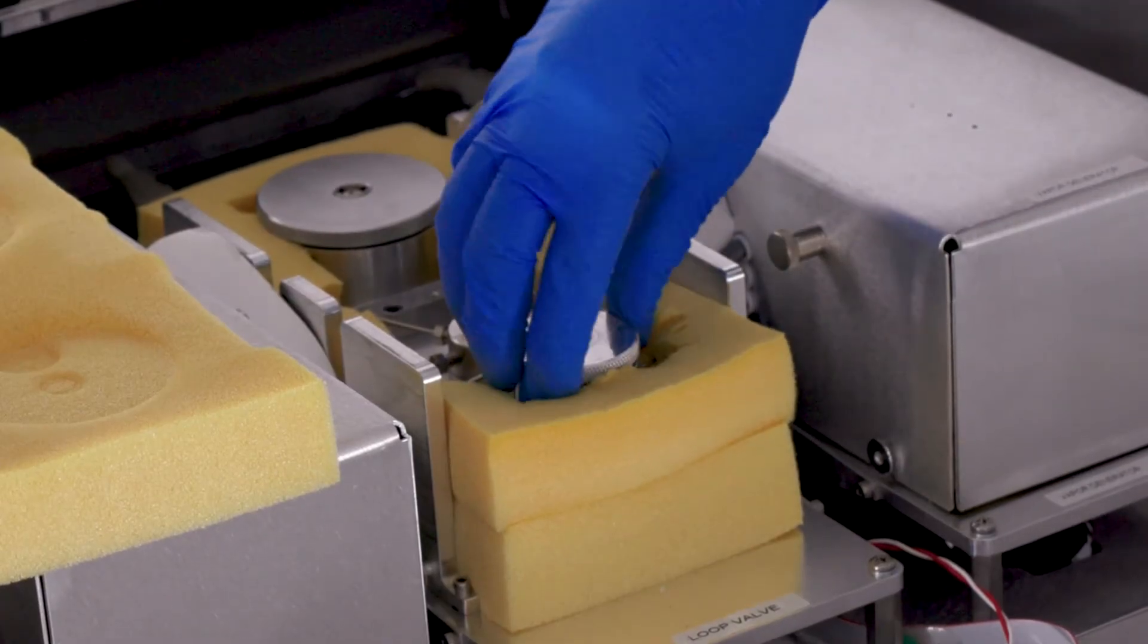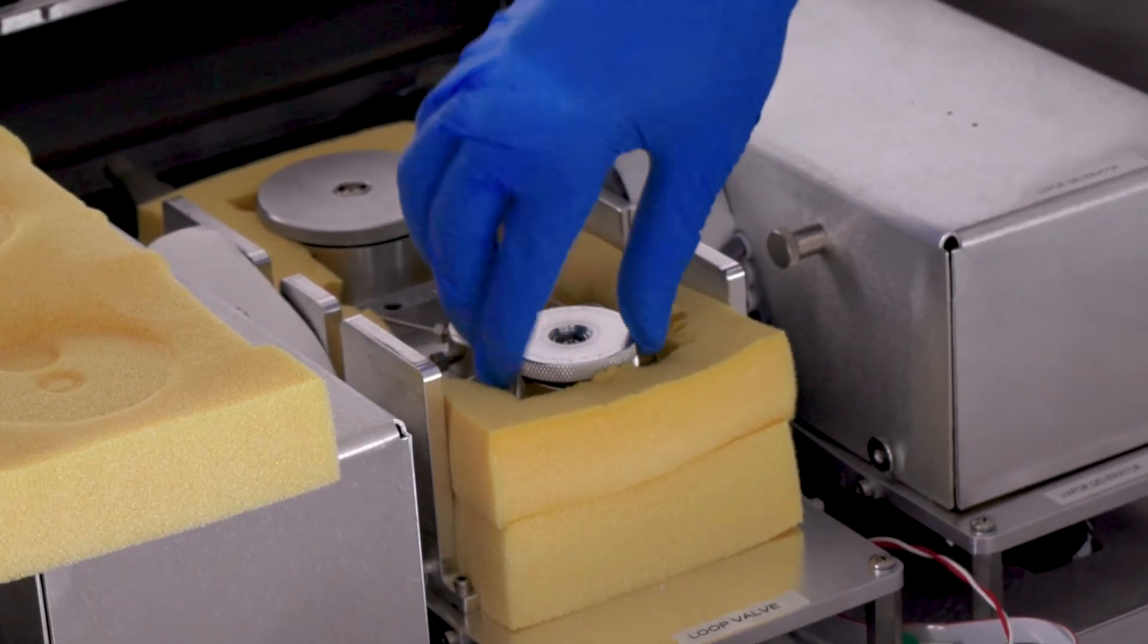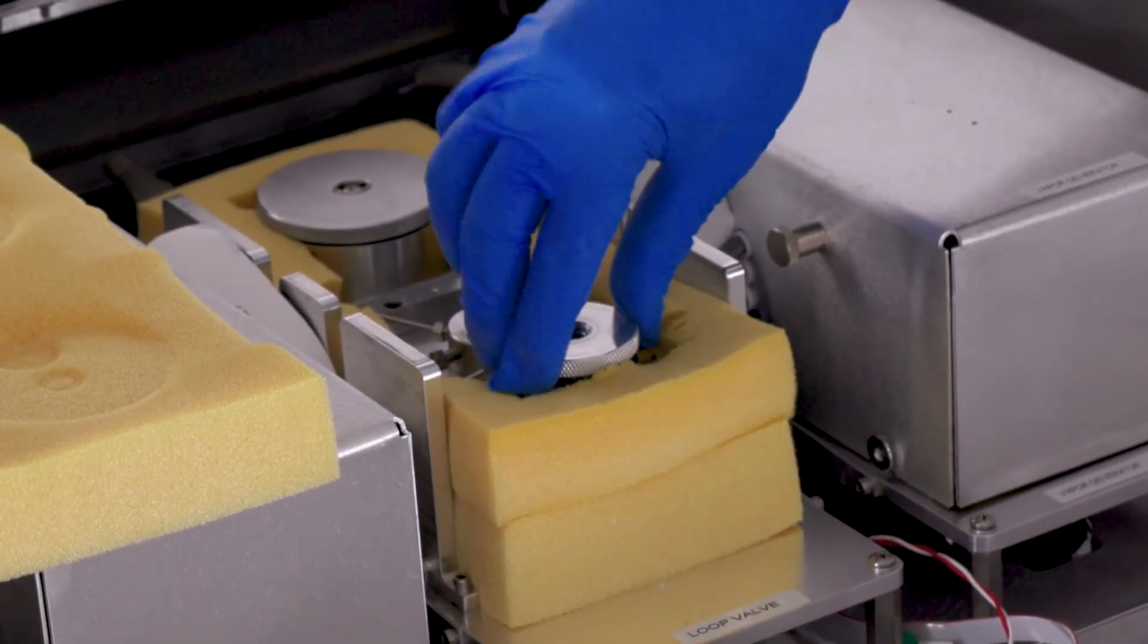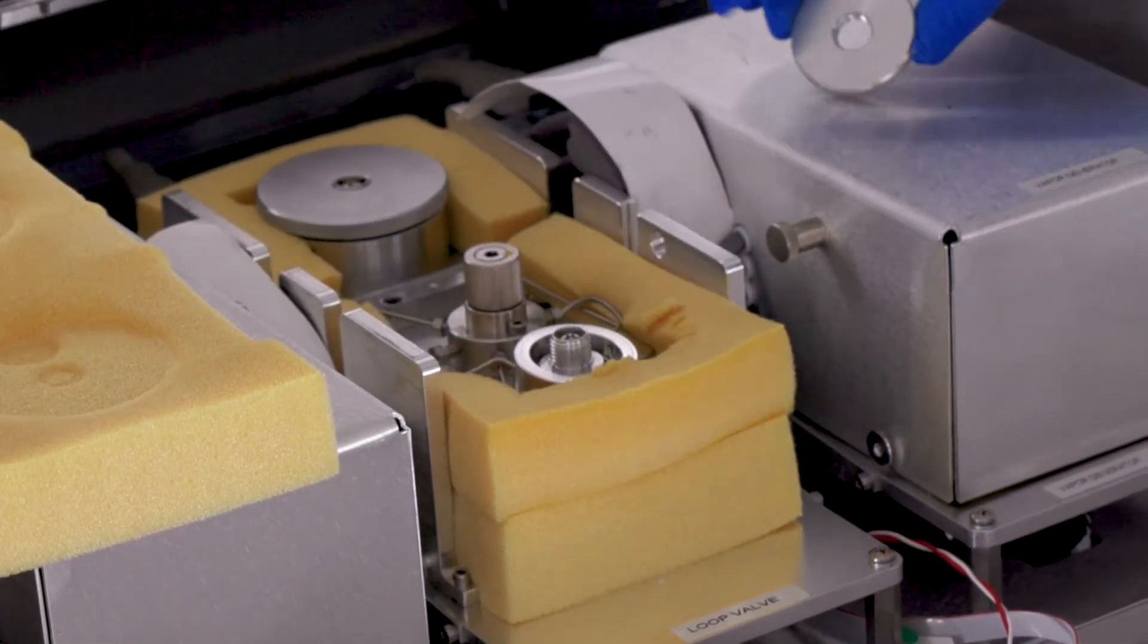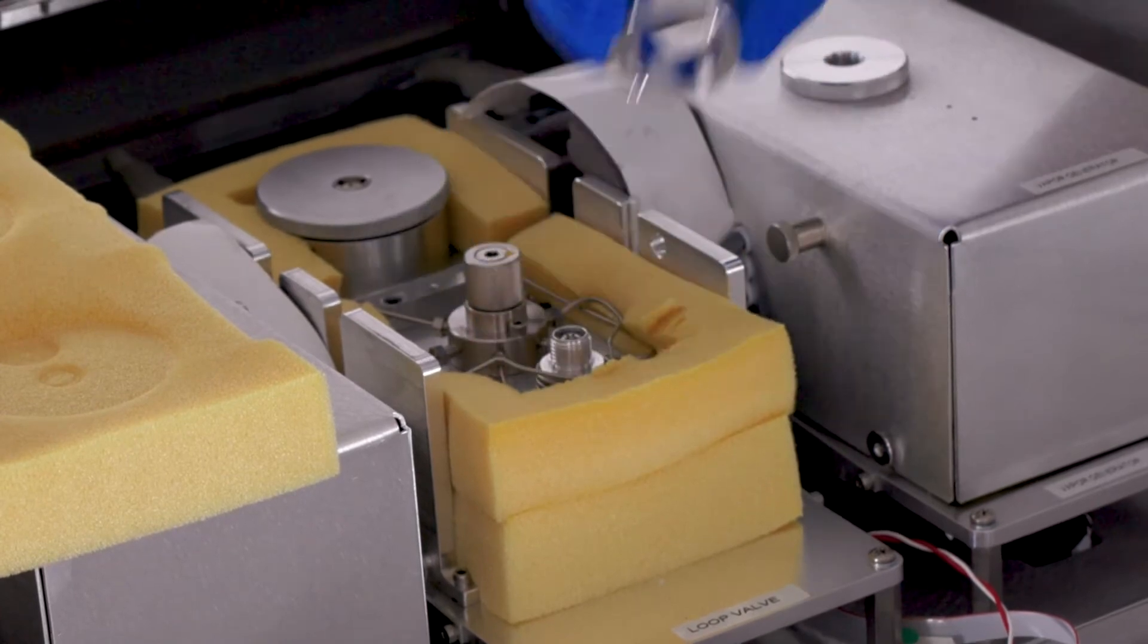Unscrew the top nut of the enclosure and place it aside. It may be necessary to loosen the screw in the middle of the assembly to free the nut. Remove the enclosure ring by lifting it up.